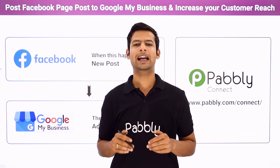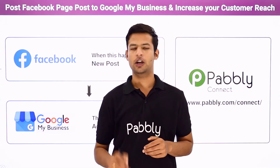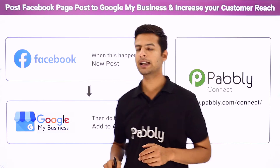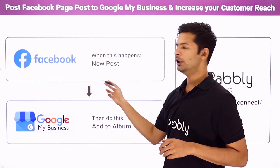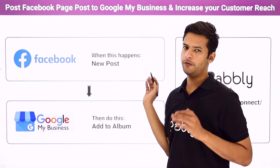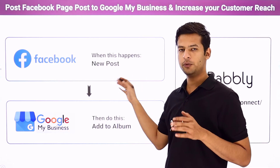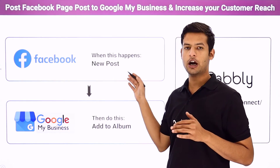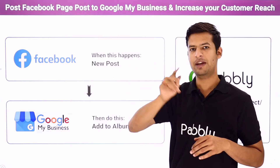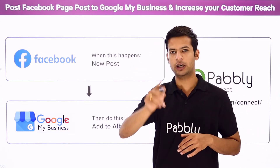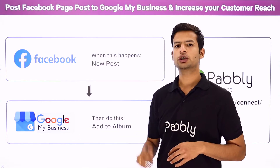So to save your time, I suggest you bring some automation here. You want something like: you have shared a new post on your Facebook account, and as soon as you share it, automatically that same image will be uploaded in the albums of your Google My Business account.